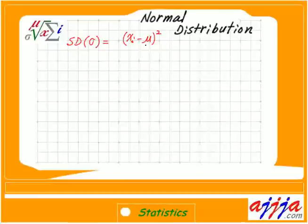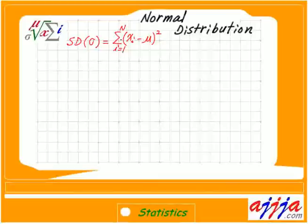Then we square it, because we need a positive number. Then we add everything together — that's what we call sigma, where i goes from one through the total number N. Then divide by N.